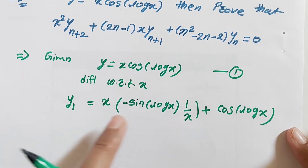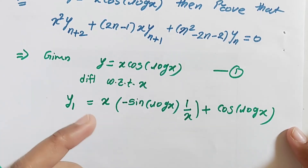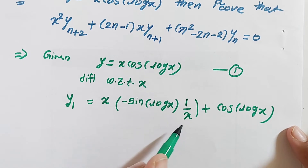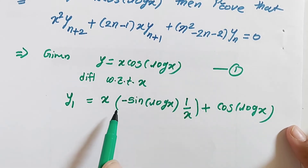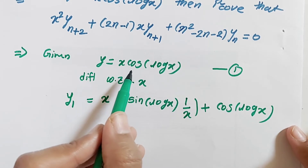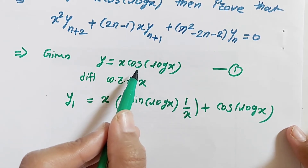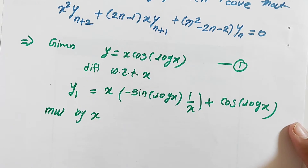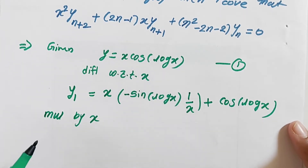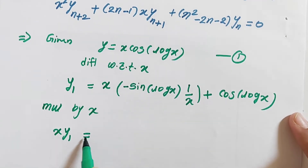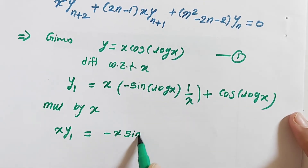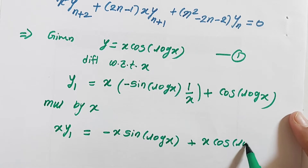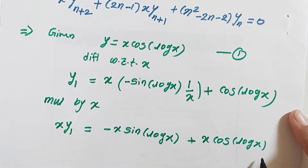To avoid having to use the quotient rule for the next derivative, we multiply through by x. This x may cancel out the 1/x, but we don't cancel it because we need to convert the term back to equation 1, which contains x multiplied by cos. So x·y₁ equals minus x·sin(log x) plus x·cos(log x).